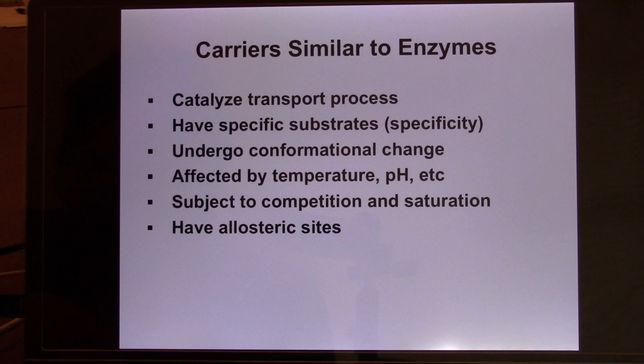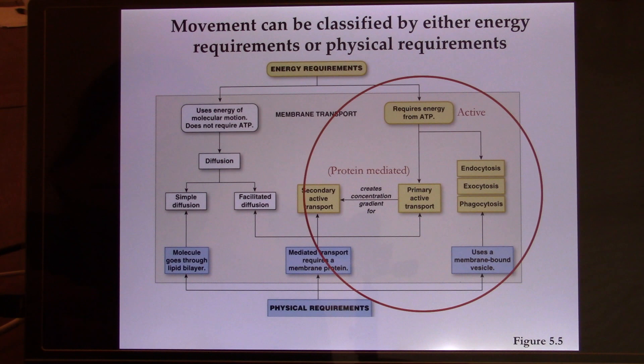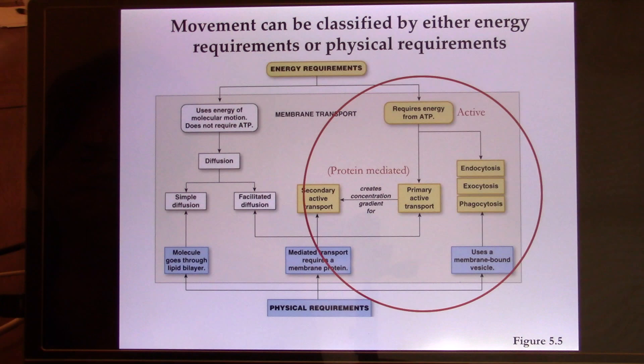Now let's move to active transport. The definition of active transport, from the cell's point of view, is that the cell needs to use ATP to make this transportation happen. Some forms we've already learned — like endocytosis, exocytosis, and phagocytosis — where the cell membrane moves in or out to swallow molecules in or release molecules out.